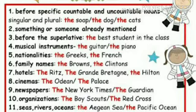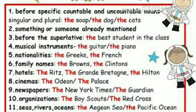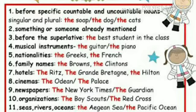Number one: before specific countable and uncountable nouns, singular and plural — the soap, the dog, the cats. Number two: something or someone already mentioned. Number three: before the superlative — the best student in the class.